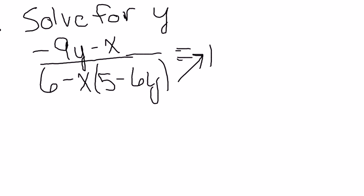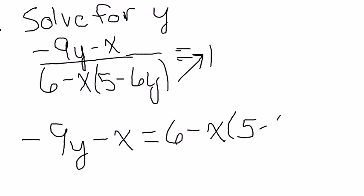So it's going to get multiplied over to here by the 1. So I'm going to have negative 9y minus x equals 6 minus x times 5 minus 6y. So now I've gotten rid of my denominator.